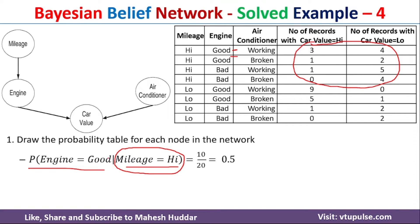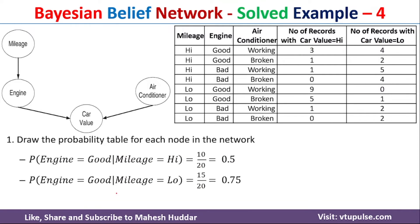The probability of engine equal to good given mileage equal to low — we consider only the low mileage examples, again 20 records. Out of those 20, engine is good: 9 plus 5 is 14, plus 1 is 15. So 15 out of 20 for this case.